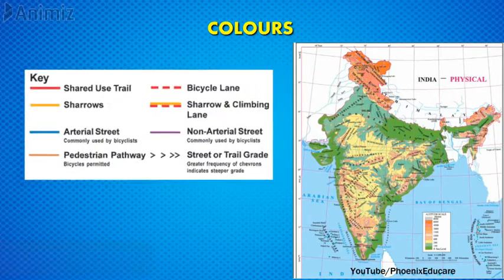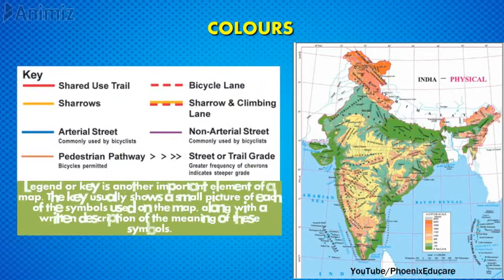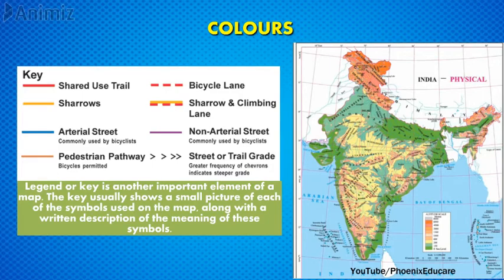Legend or key is another important element of a map. The key usually shows a small picture of each of the symbols used on the map, along with a written description of the meaning of these symbols. Some common conventional symbols are shown here.